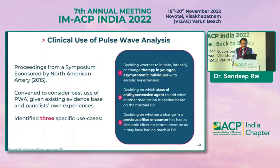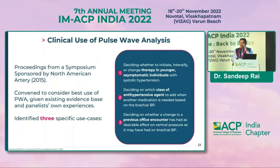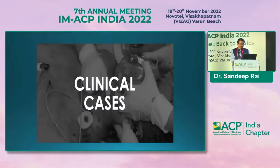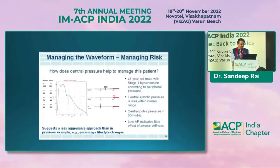The uses of pulse wave velocity and arterial stiffness measurement are: first, preventive — as early as you see the patient, do arterial stiffness and endothelial function to prevent cardiovascular, kidney, and brain problems by a huge magnitude. Second, in the treatment of hypertension, it can tell you whether therapy is required in a younger asymptomatic individual and which class of antihypertensives are better.